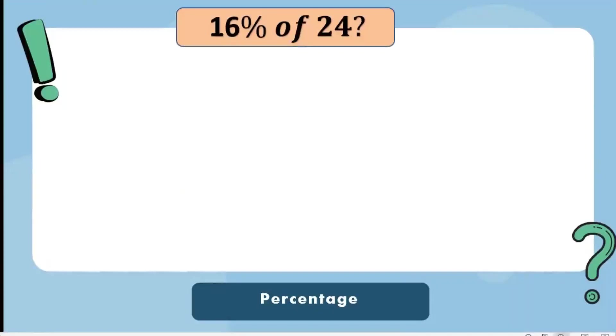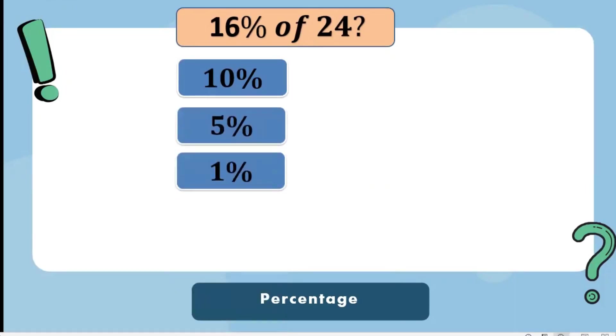Let's find 16% of 24. First, split 16% to 10%, 5%, and 1%. 10% of 24, or 10% of a number, you will just move one place over, the answer is 2.4.